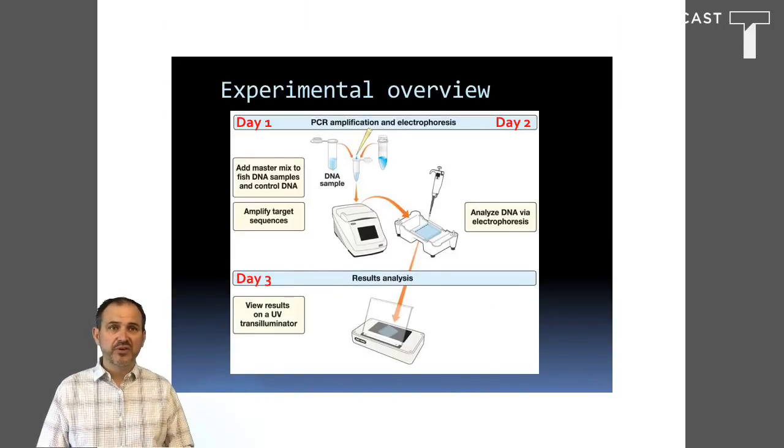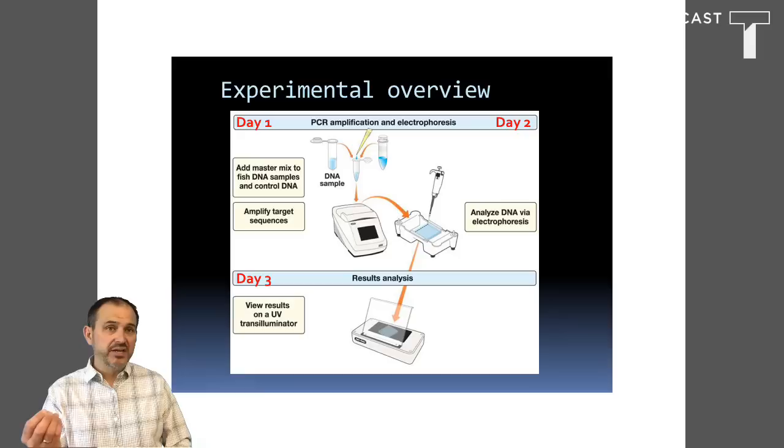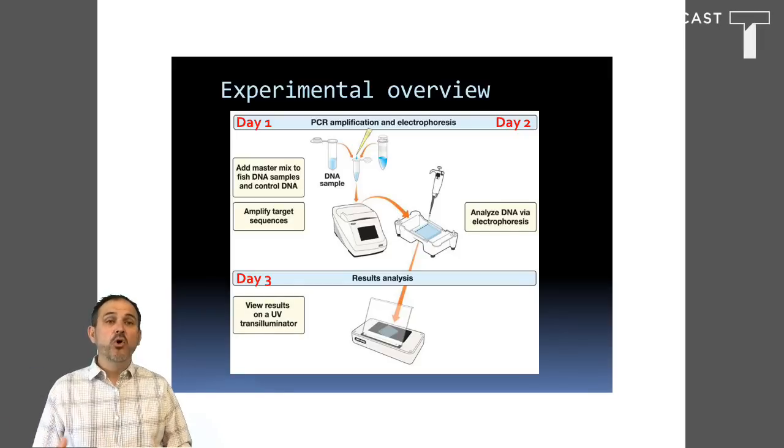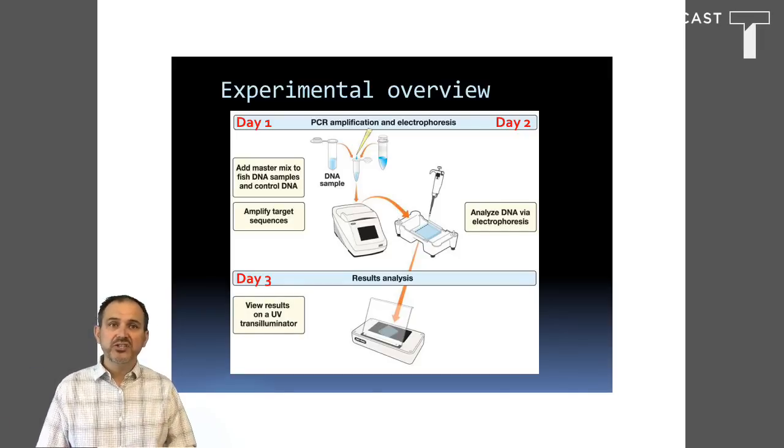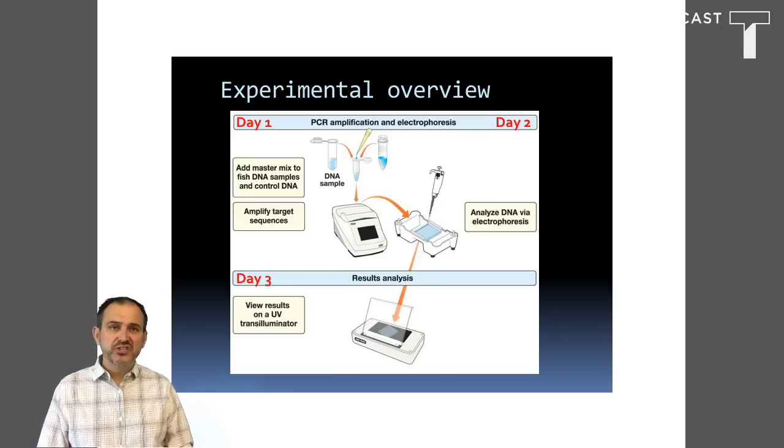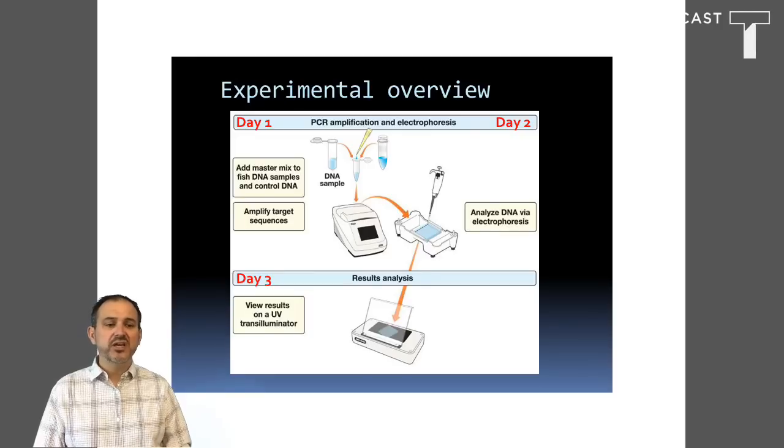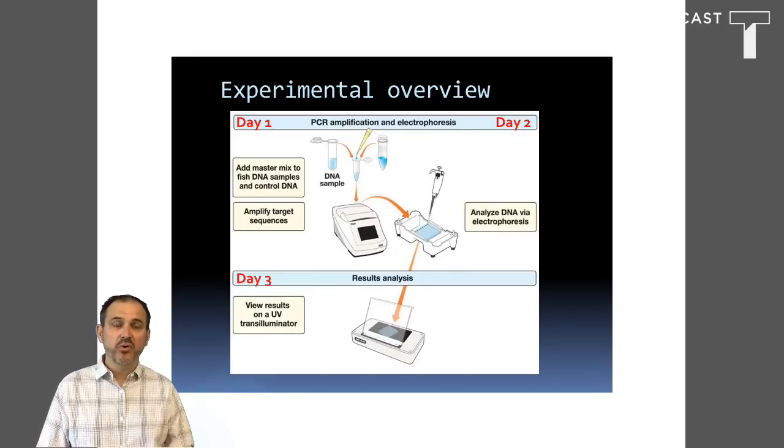The next step is PCR amplification. In this step, the template, i.e. the DNA that we isolated from the prior step, will be used as a template in a polymerase chain reaction. The purpose of this step is to amplify the 648 base pair target sequence using the cytochrome C oxidase subunit 1 specific primers.